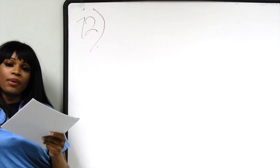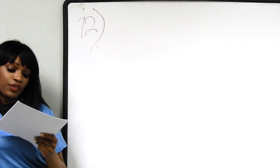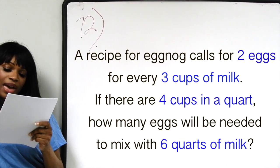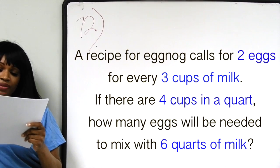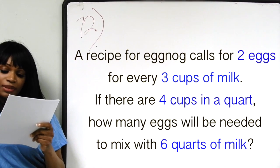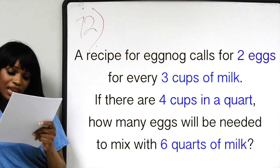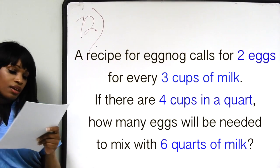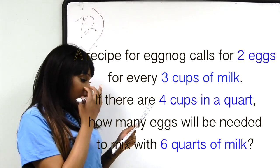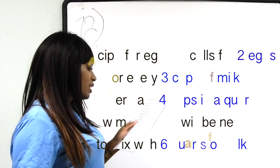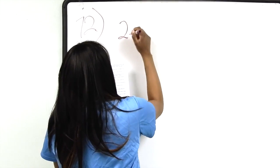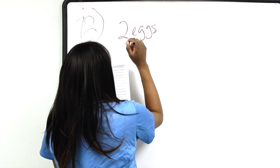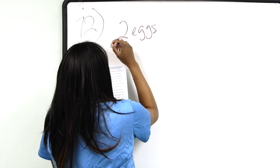Number 72 on the Math 086 final review. A recipe for eggnog calls for two eggs for every three cups of milk. If there are four cups in a quart, how many eggs will be needed to make six quarts of milk? We know that for every two eggs in this recipe, you need three cups of milk.